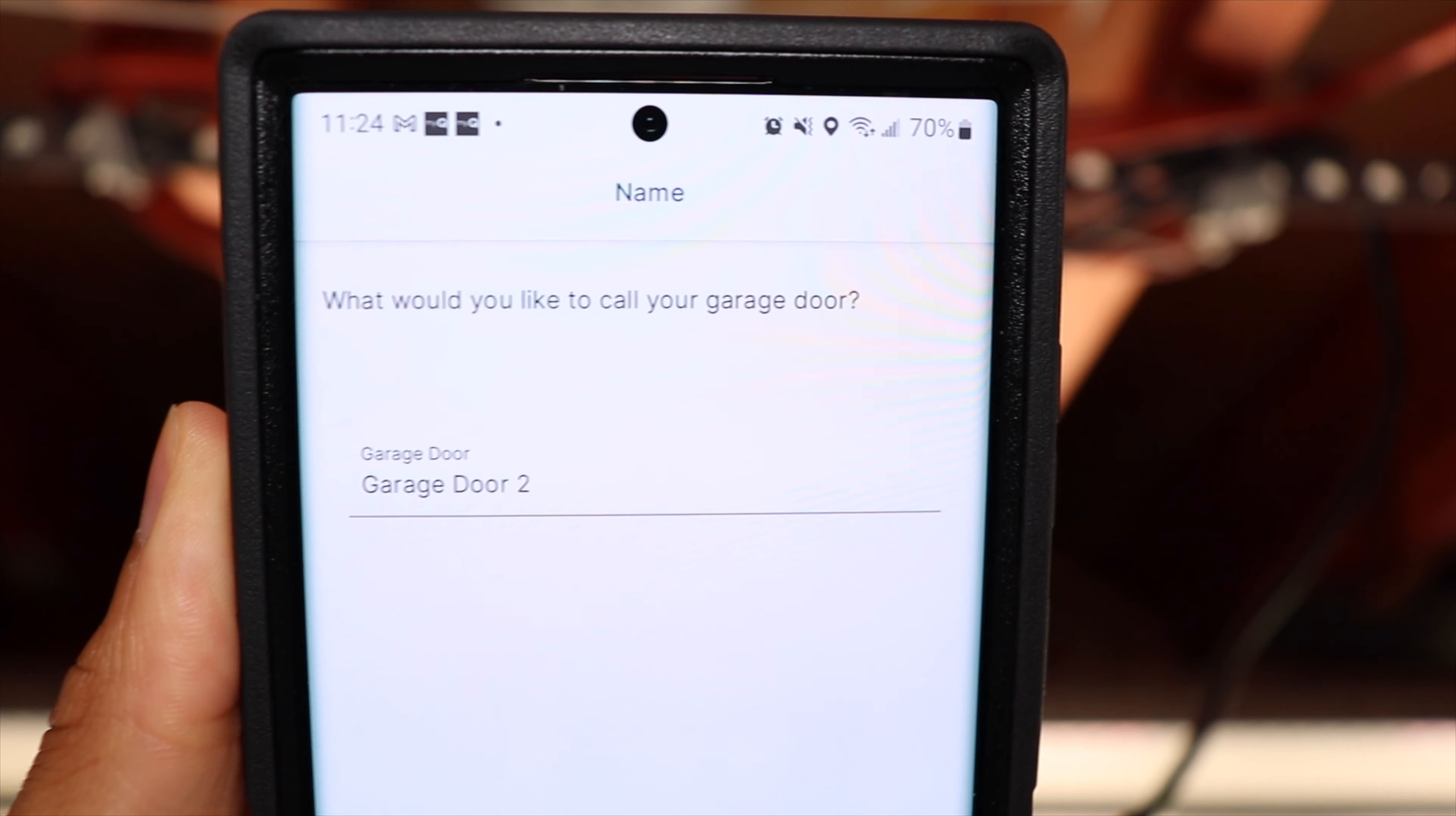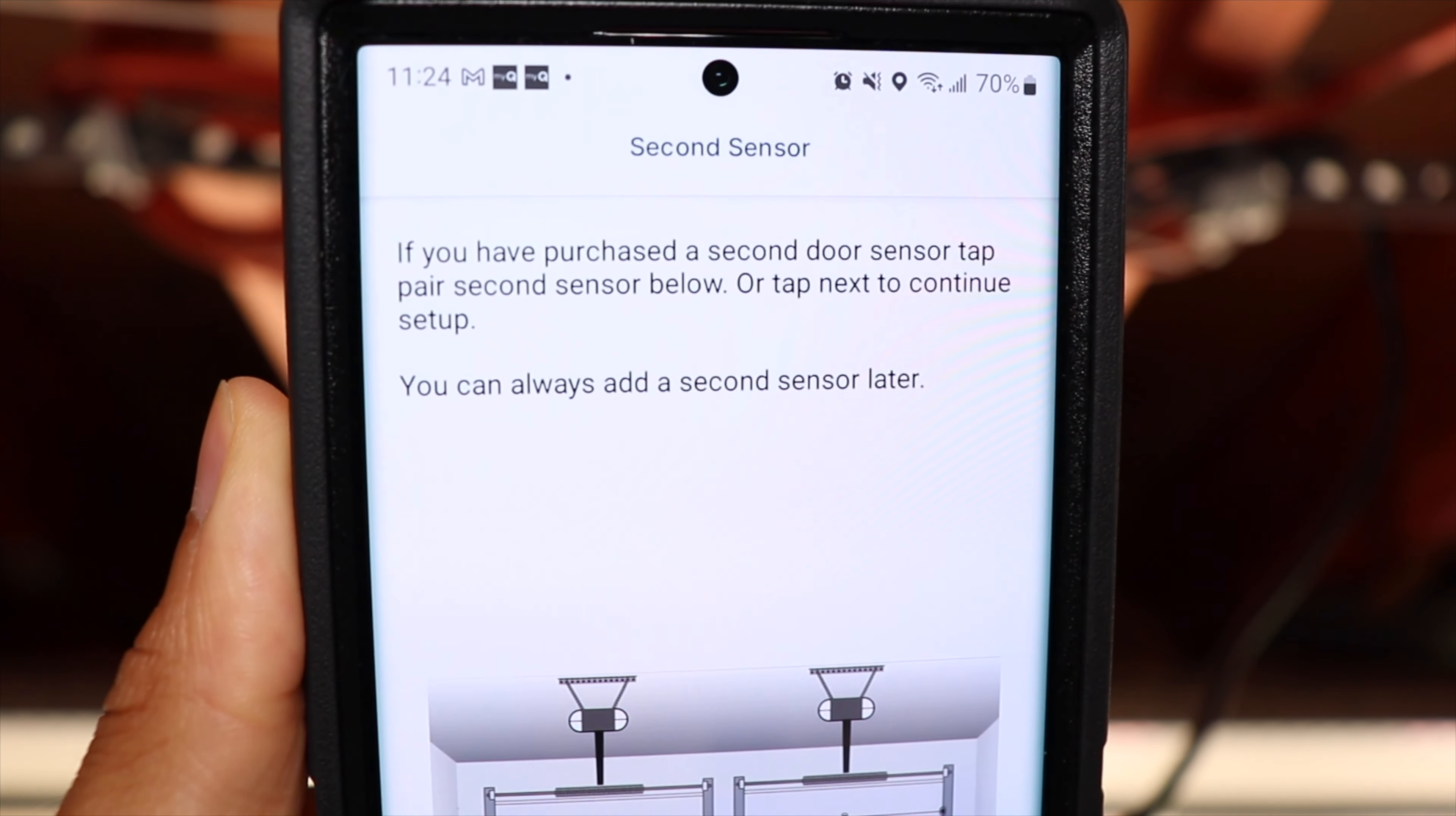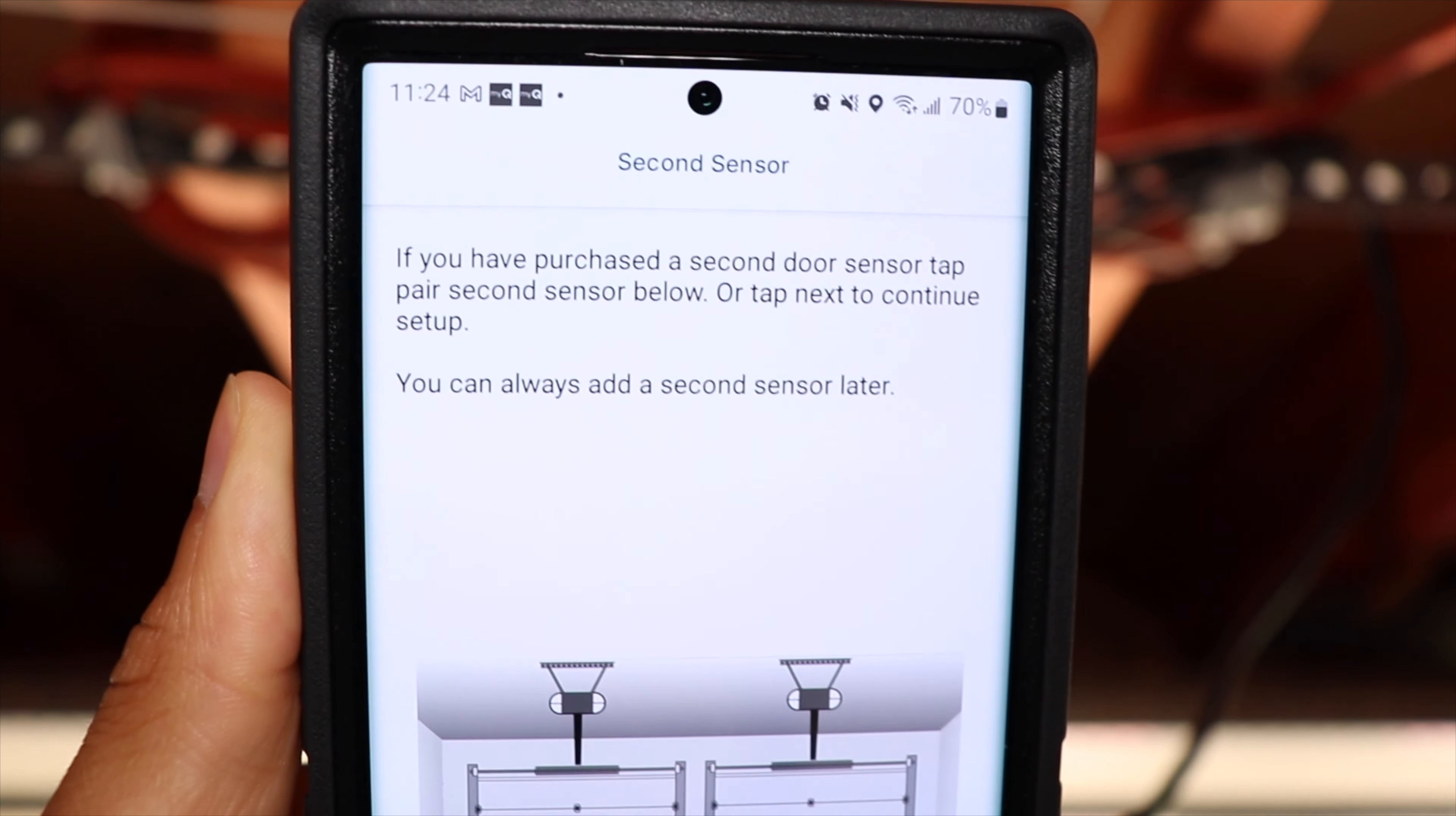So once everything is paired up, you can go ahead and choose a name for your garage door. And this is also where you can set up another door sensor if you purchased more than one. If you don't set up a second door sensor now, you do have the option to set one up later.